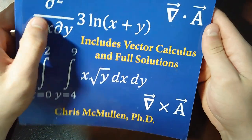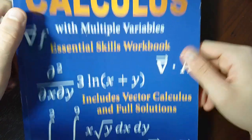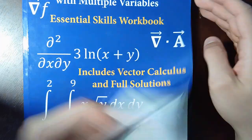This is the first book I want to go over. It's called Calculus with Multiple Variables Essential Skill Workbook. Basically, it's all about vector calculus. This is like calculus three with workbooks. The book actually starts off, it doesn't have a lot of huge explanations. It's more of a workbook.